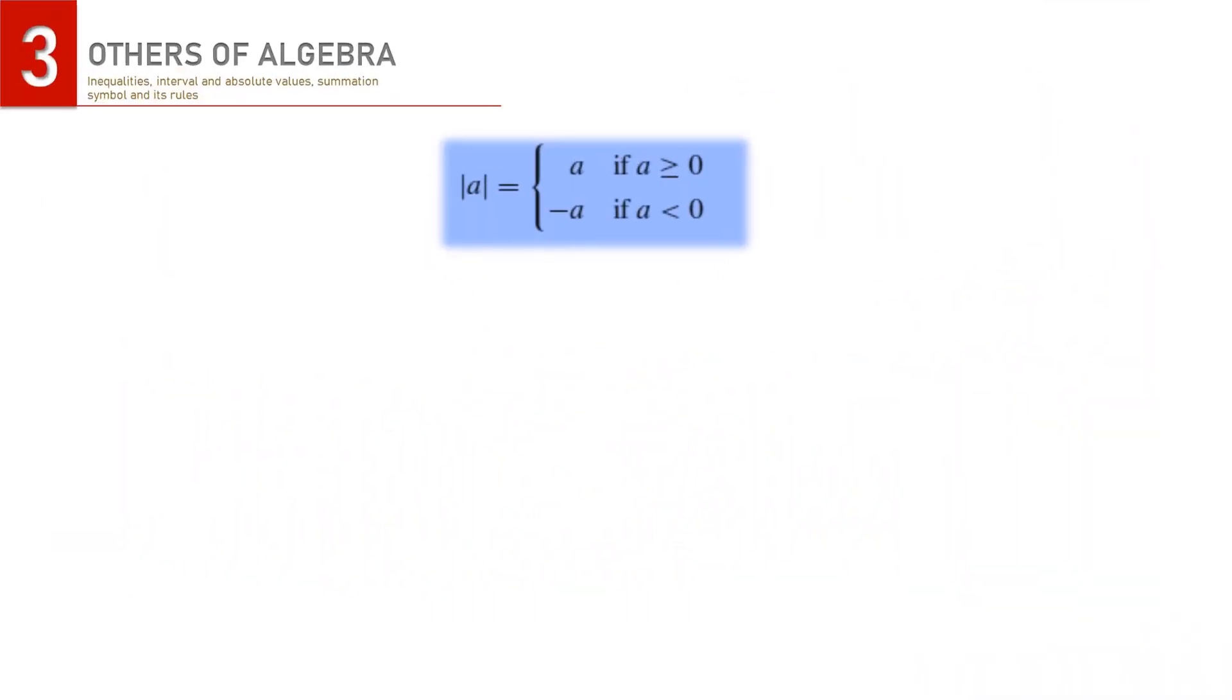Absolute value is not difficult to comprehend either. The idea is just that if you are talking about a single number, then the absolute value of any number must be positive. It means that if the number, suppose a, is positive, then the absolute value is just a itself, a positive number.